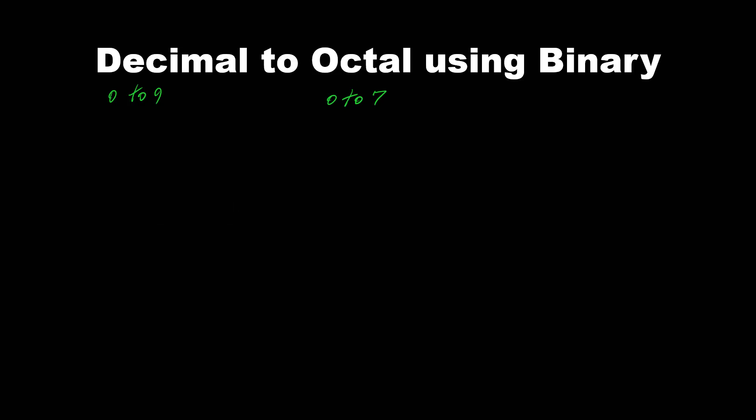And we have to keep in mind that for every octal number, we have 3 bits. Because in 3 bits, it covers 0 to 7. If we turn off all of them, that's 0. And if we turn on all of them, that's 7: 4 plus 2 plus 1. So for every octal number, we have 3 bits. Now let's say we have 140 decimal number, and we want to convert it to octal number using binary.